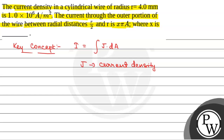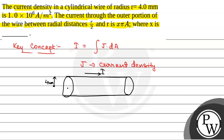We have been given a cylindrical wire section. Suppose this is the cylindrical wire section and current is flowing in direction i. The radius of this cylindrical wire section is 4 mm. This is r, and r/2 is marked as well. We have to calculate the current in the outer portion between r/2 and r. The elementary area element dA will be equal to 2πx dx.